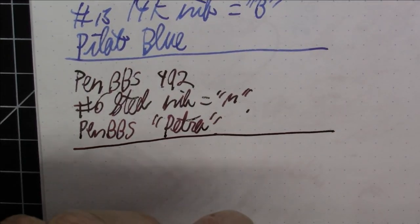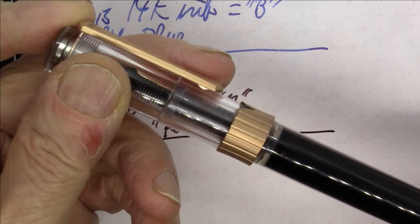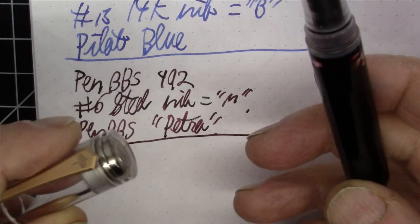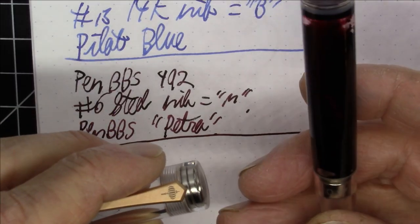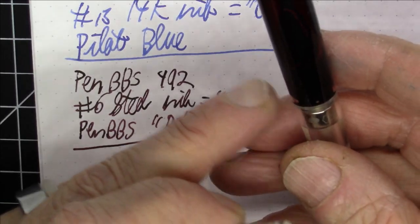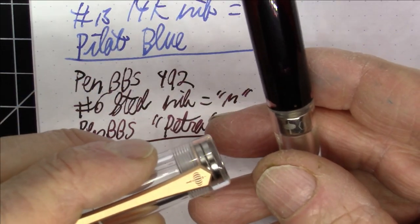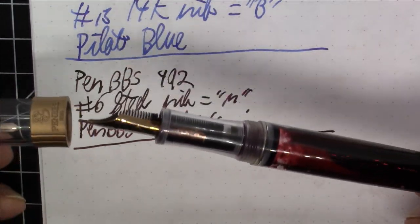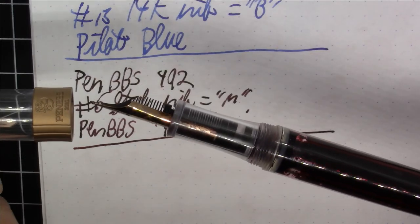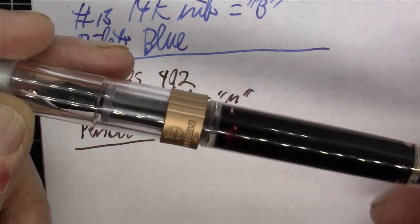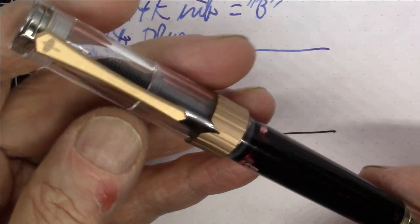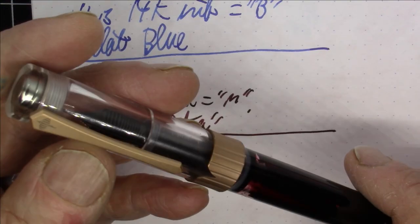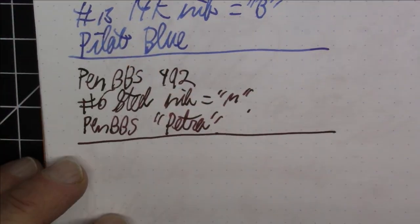PenBBS 492. Cool pen has this magnetic filling mechanism. I can't demonstrate it here, but basically what happens is it has a magnet at the end of the piston, magnet in the cap, you drag the piston up and down. Sometimes it works and sometimes it doesn't. I've mostly had success with both this and the 487. Other reviewers online have had less luck. Stylistically, this is a really nice looking pen. They did a beautiful job with this. The filling mechanism is a little twitchy, to say the least.